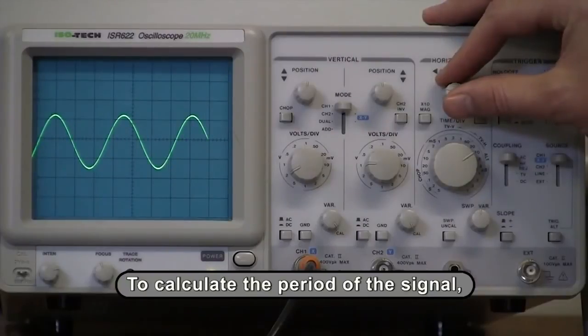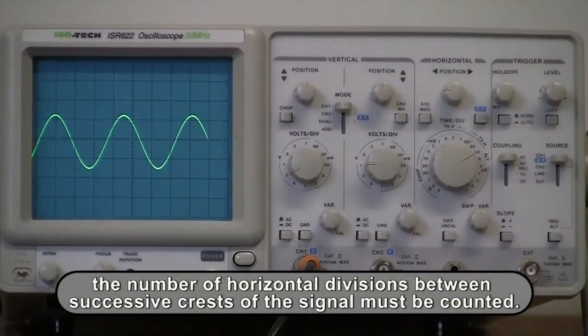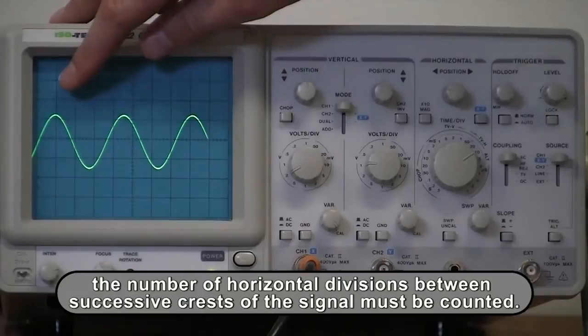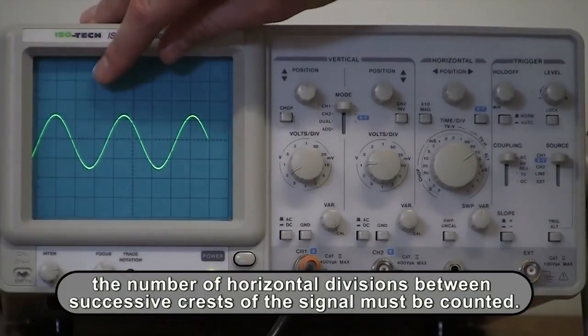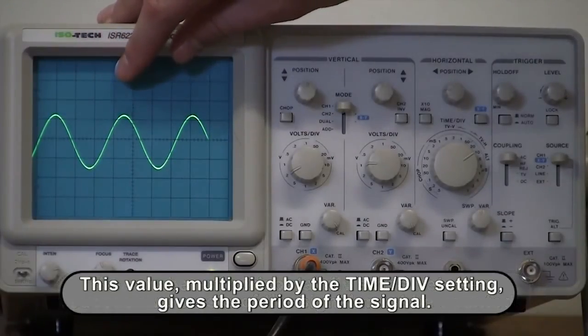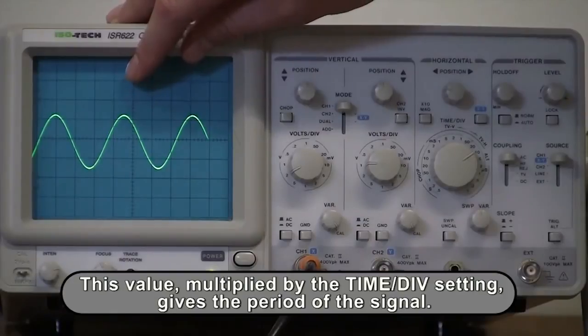To calculate the period of the signal, the number of horizontal divisions between successive crests of the signal must be counted. This number, multiplied by the time per division setting, gives the period of the signal.